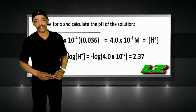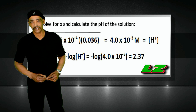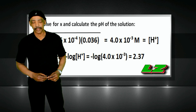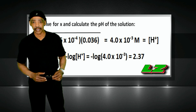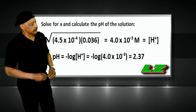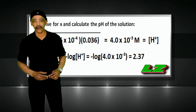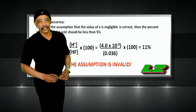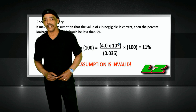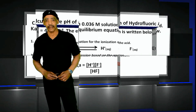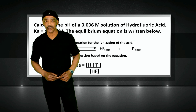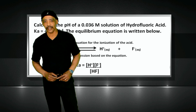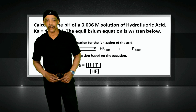Now checking for accuracy: if it was valid to consider X negligible, then the percent ionization of the acid should not exceed 5%. In this case, the percent ionization was actually 11%, which is far above the accepted range. This means we must go back to the calculation from the Ka expression, this time inserting X into the denominator, writing 0.036 minus X. This will lead to a quadratic equation.